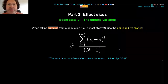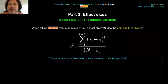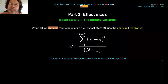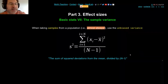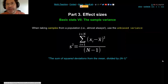Dividing by N minus one corrects for the fact that you only have a sample and don't know the exact population mean or standard deviation. You almost always divide by N minus one for sample variance and sample standard deviation. In Excel, when asked to choose between sample and population standard deviation, the correct answer is almost always the sample version — the N minus one version — which gives you a slightly larger variance and slightly less chance of being wrong.